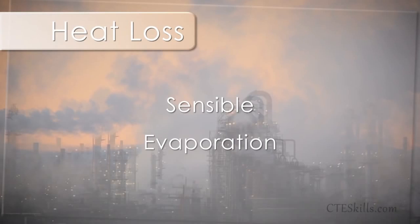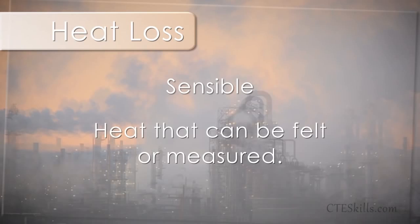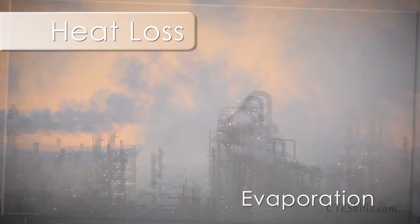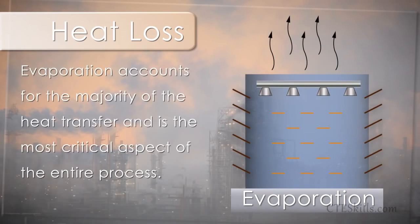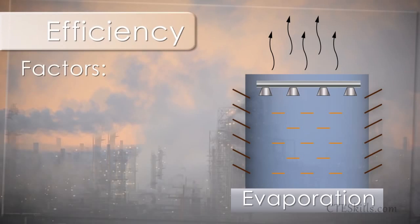There are two types of heat loss that occur in this process: sensible heat loss and evaporation. Sensible heat is what can be felt or measured. Evaporation accounts for the majority of the heat transfer and is the most critical aspect of the entire process.